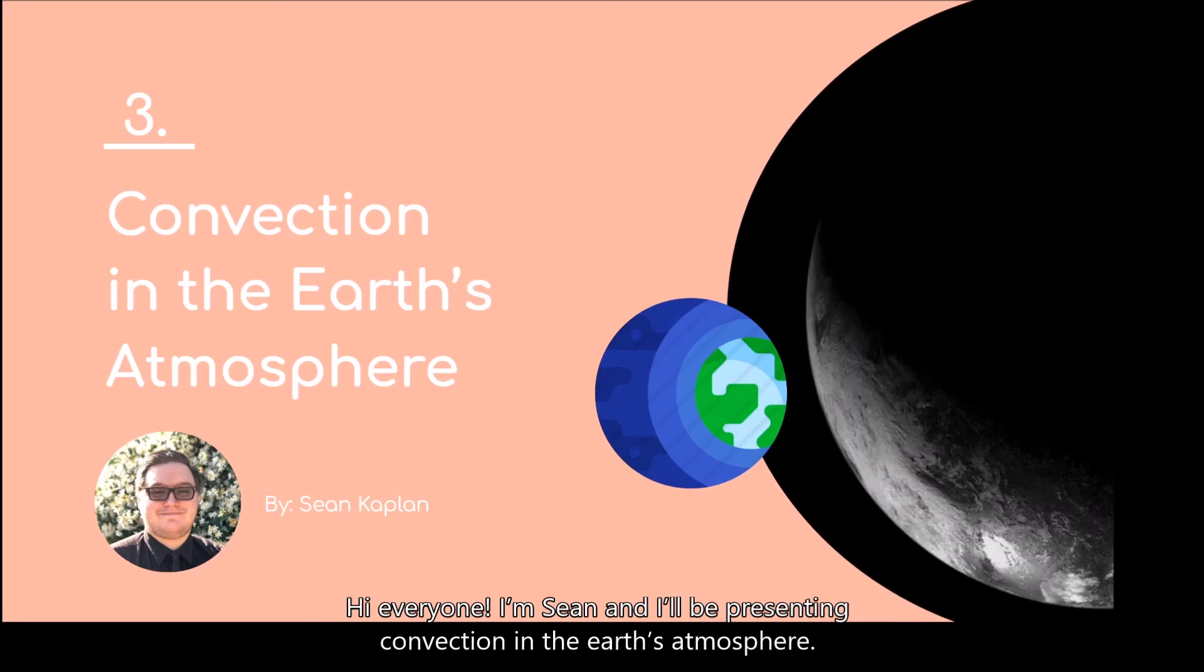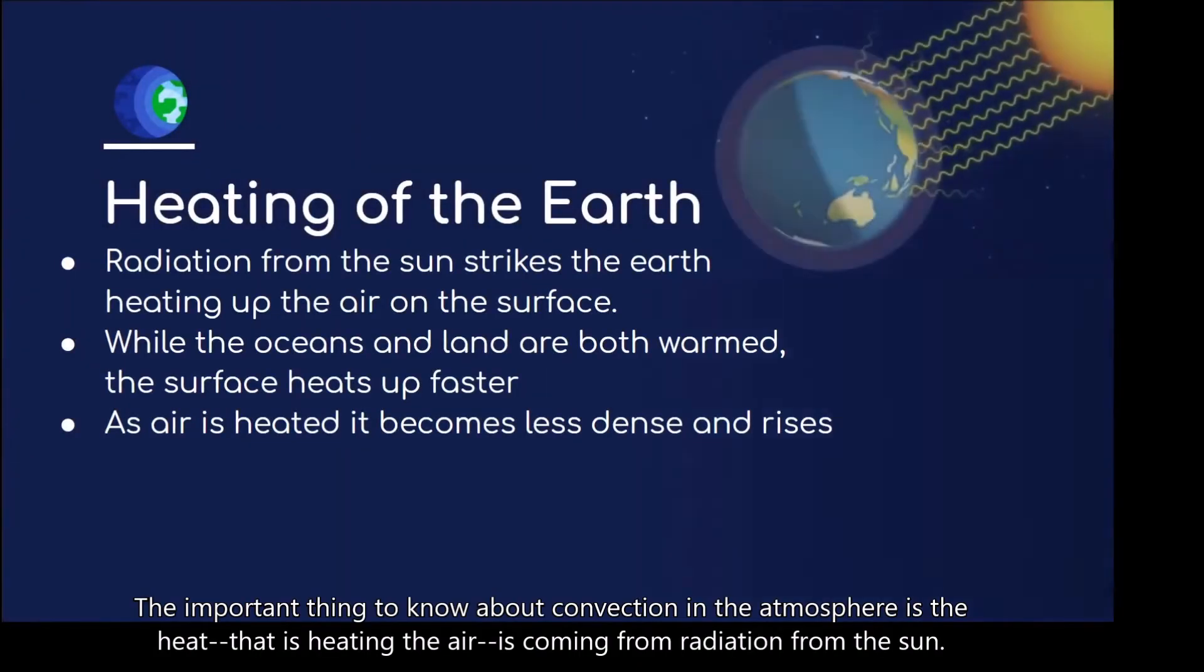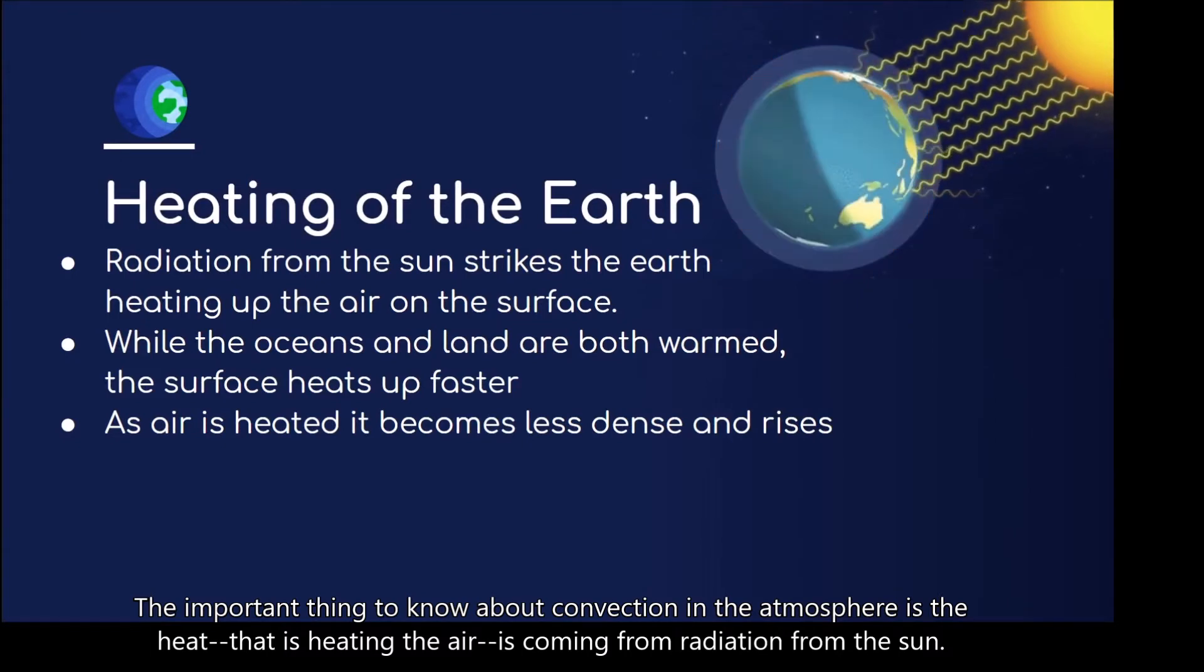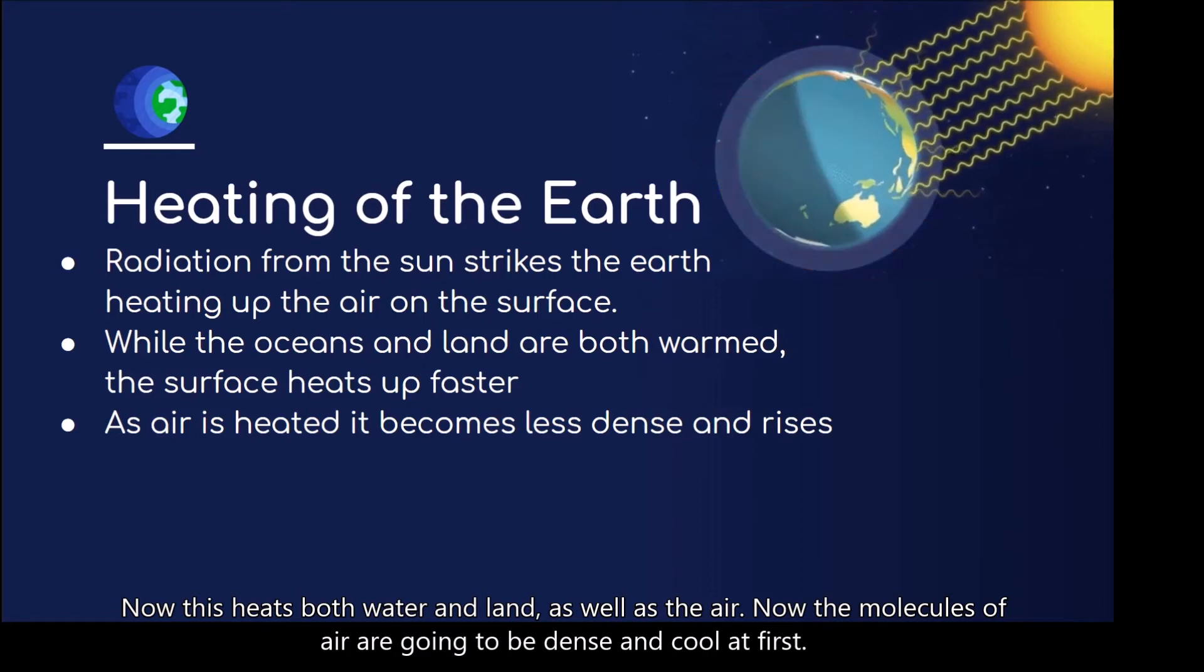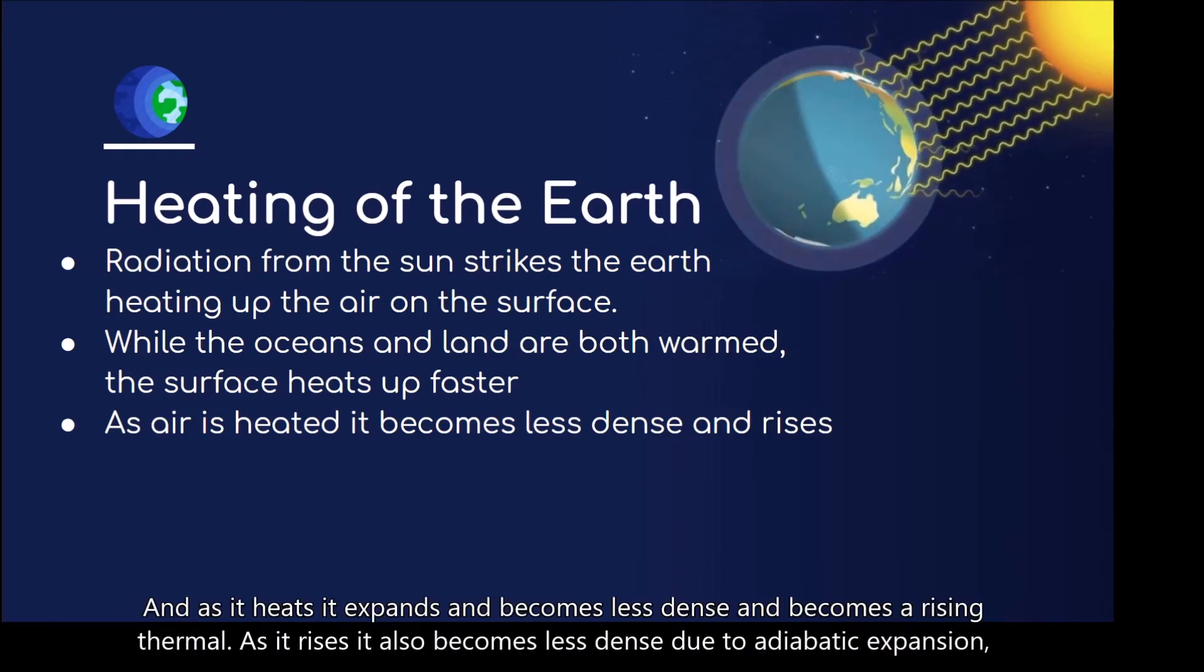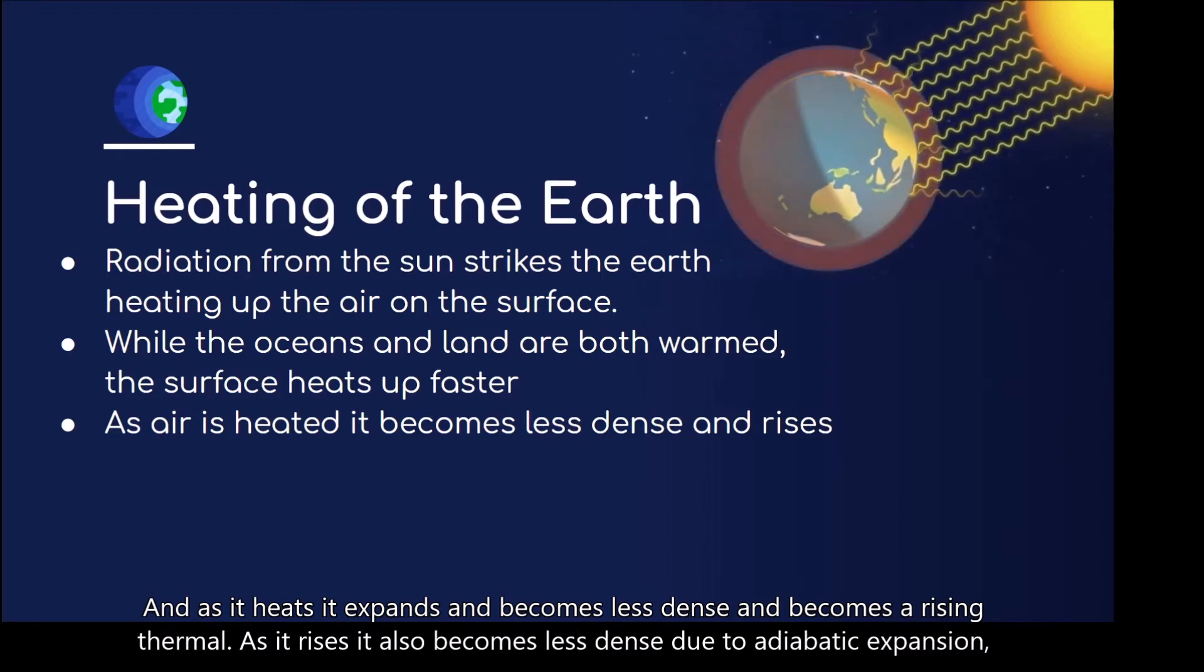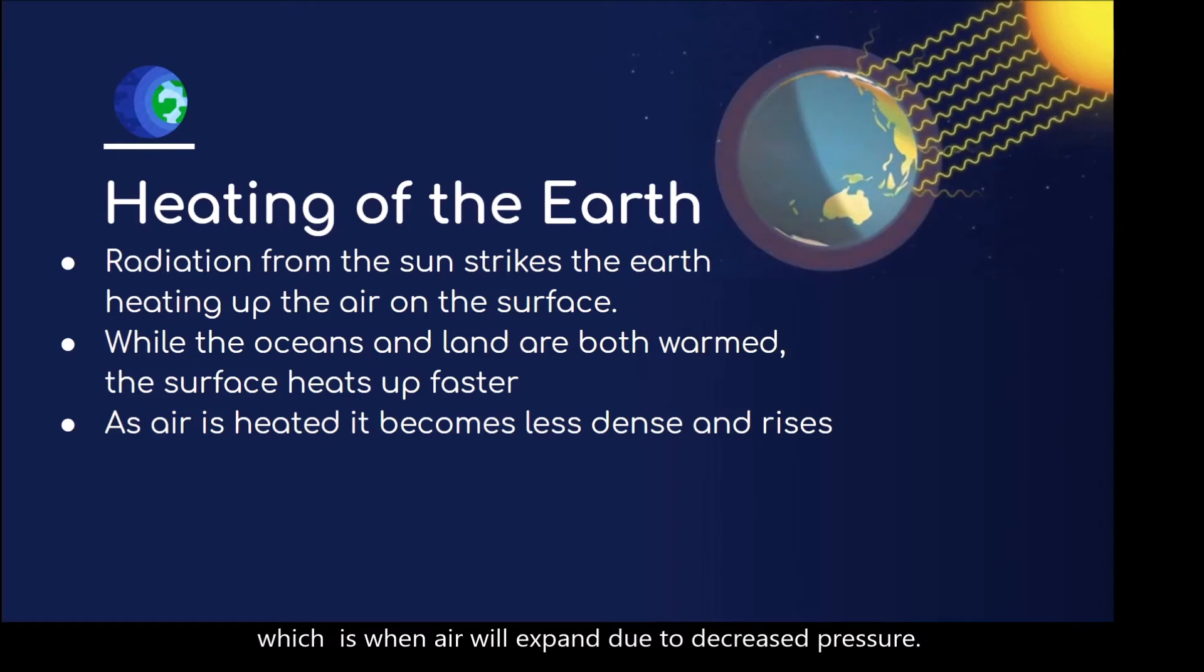Hi everyone, I'm Shawn, and I'll be presenting convection in the Earth's atmosphere. The important thing to know about convection in the atmosphere is the heat that is heating the air is coming from radiation from the sun. Now, this heats both water and land, as well as the air. The molecules of air are going to be dense and cool at first, and as it heats, it expands and becomes less dense and becomes a rising thermal. As it rises, it also becomes less dense due to adiabatic expansion, which is when air will expand due to decreased pressure.